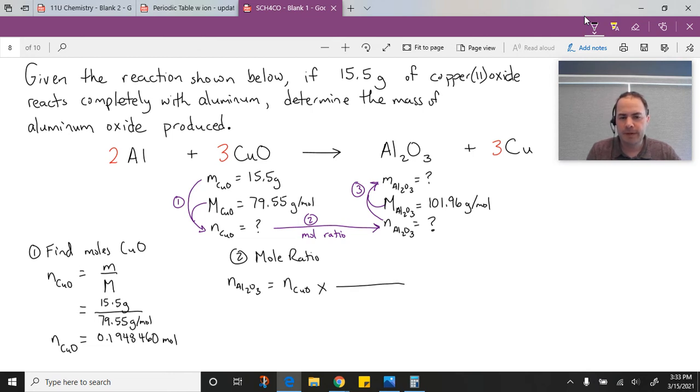Remember, the chemical we're trying to find goes on top, so that's our one mole of Al2O3. The one we're using to get there goes on the bottom, so three moles of CuO. Those come from our balanced chemical equation. This is what allows us to compare one substance to the other.